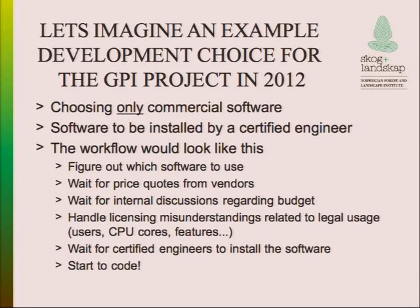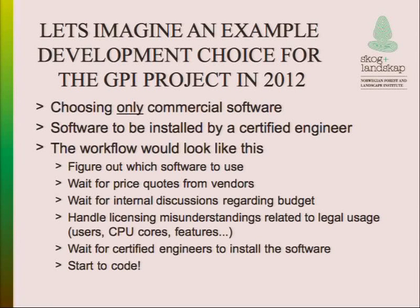The workflow would look like this: first, figure out what software to use; then wait for price quotas from vendors - prices vary quite a bit and it's nearly impossible to determine the price without knowing the exact runtime environment. Then wait for internal budget discussions - 'you really need 100,000 dollars for this?' That's impossible in our organization. Then handle licensing misunderstandings - for example, running on VMware with 64 CPUs means paying for 64 CPUs even if you only use two.